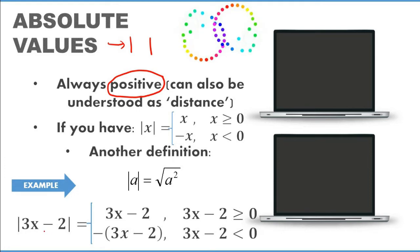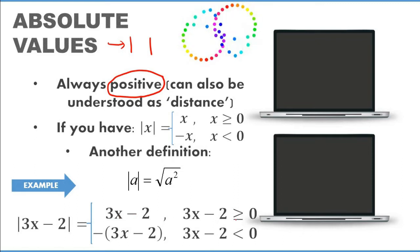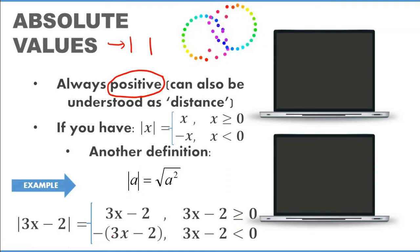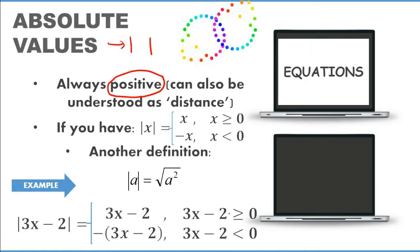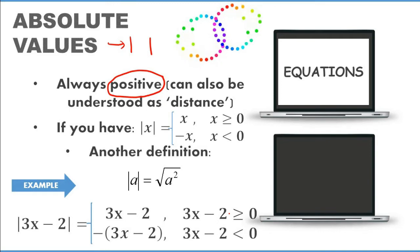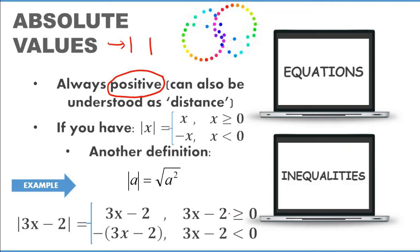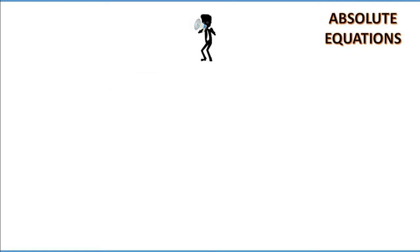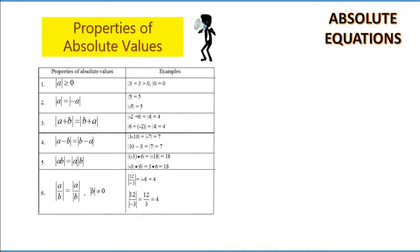For example, the modulus of 3x minus 2 can be defined as 3x minus 2 where 3x minus 2 is greater than or equal to zero, or its negative when 3x minus 2 is less than zero. In this subtopic there are two things that will be discussed: the first one is equations and the second one is inequalities.